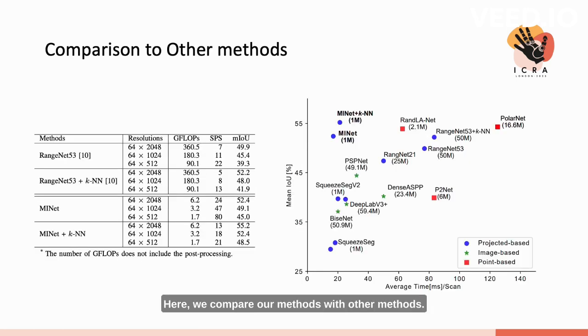Here, we compare our methods with other methods. On the left, we observe our methods can outperform previous projection-based methods, like RangeNet, with much better efficiency. On the right, we can observe our methods can achieve a good balance of performance and efficiency compared to other methods.